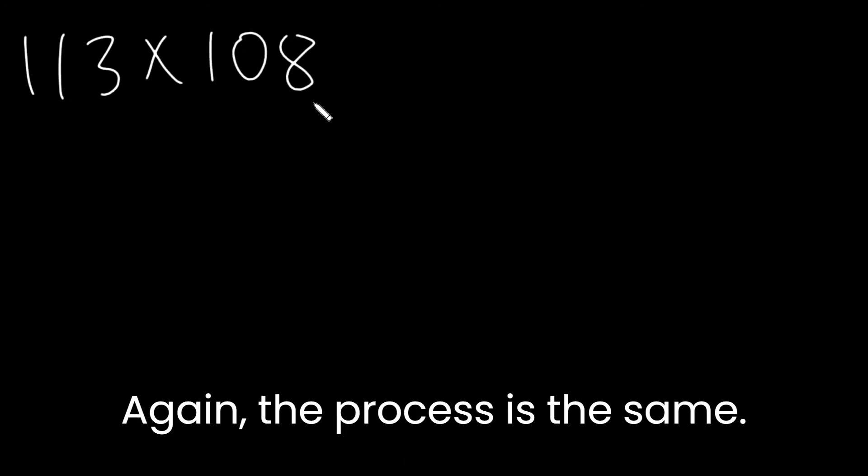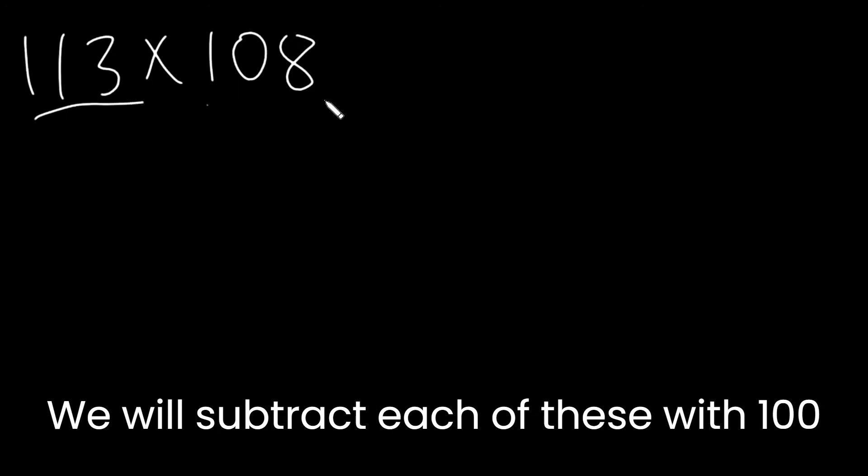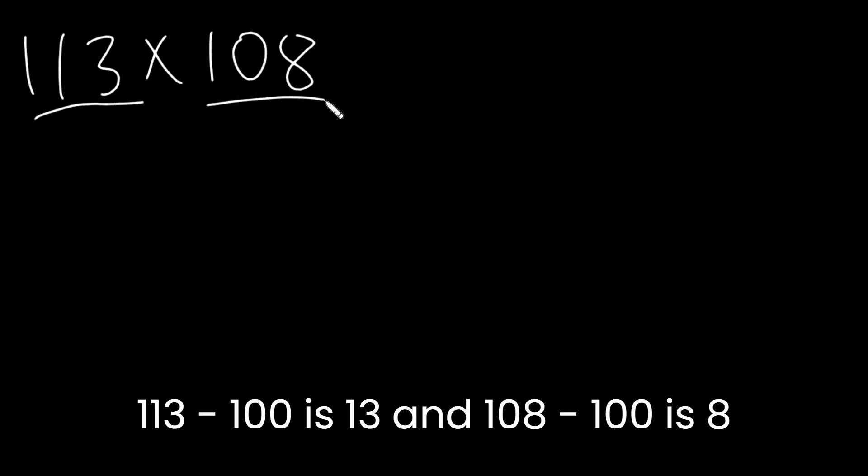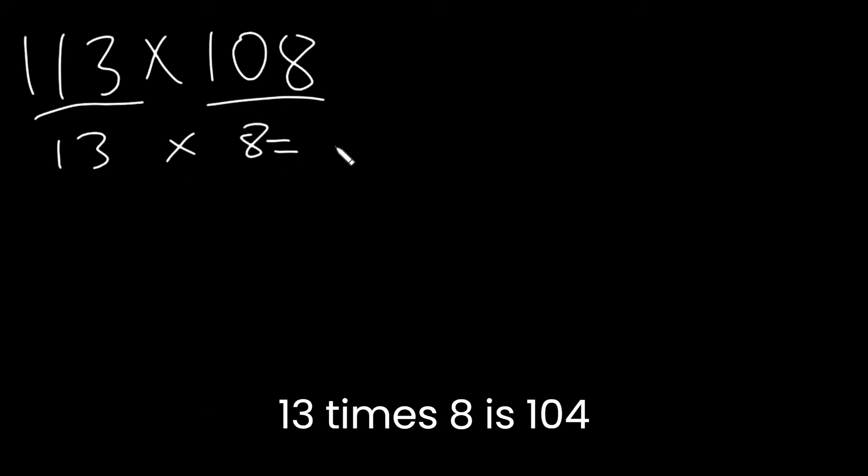Let's look at another example. Let's say we have 113 times 108. Again, the process is the same. We're going to subtract each of these with 100. 113 minus 100 is 13. And 108 minus 100 is 8. 13 times 8 is 104.